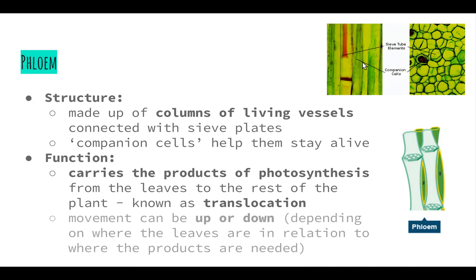Phloem can carry substances up or down depending on where the leaves are in relation to where the products are needed. For example, in rose bushes, leaves form in the middle of the stem and the rose bud is towards the top, so the products of photosynthesis need to travel up to the flower to provide energy for growth. But the roots also need glucose and oxygen to carry out cellular respiration, so it will also travel downwards. One way to remember the role of phloem is the three P's: phloem carries the products of photosynthesis.